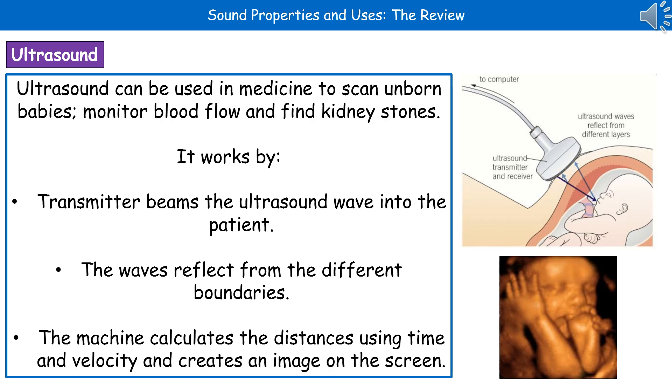The way we actually do this is shown in the diagram on the top right there. We've got an ultrasound transmitter and receiver, which is that weird thing they stick on the mother's belly when they're doing this on TV. The transmitter beams the ultrasound wave into the patient. As those ultrasound waves travel down and hit these different boundaries, the waves are reflected back and detected by the receiver. The time it's taken to go from the transmitter and be reflected back into the receiver is calculated using the machine to work out the distance between the transmitter and our baby. It then generates this brilliant image on the screen.